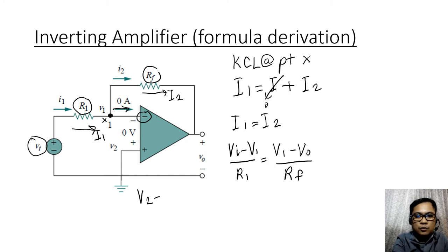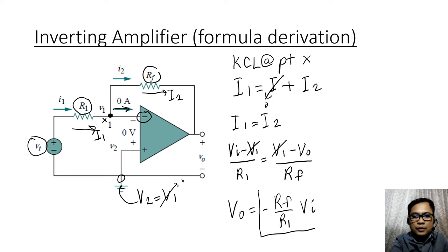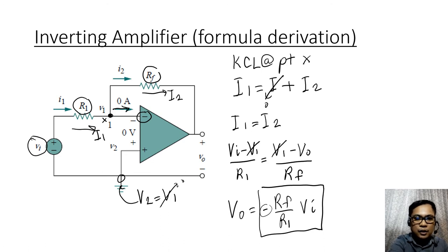That is, v input minus v1 divided by r1 is equivalent to v1 minus v out over rf. Notice that v2 is equivalent to v1, and since v2 is also connected to ground or zero volts, v1 is also zero volts. So we can equate this to zero. Simplifying, v out is equal to negative rf over r1 times v input, once you cross multiply your values. Notice that the formula contains a negative sign in front, meaning the input signal, say if you have a sine wave, the output signal is inverted or has a 180 degree phase shift.